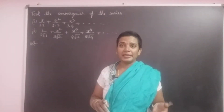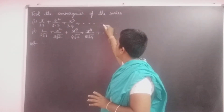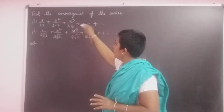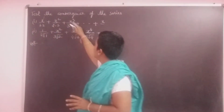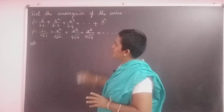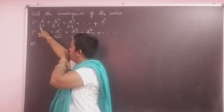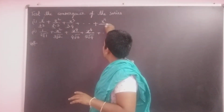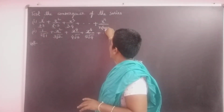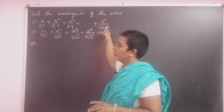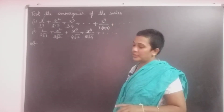No nth terms are given, so first we find the nth terms from the given series. Here x is the same. Observe the powers: 1, 2, 3 — so this starts with x^n. These denominators are in AP: 1, 2, 3 is n, and 2, 3, 4 is n+1. So the nth term for the first problem is x^n / (n(n+1)).